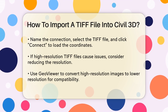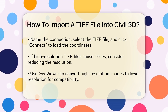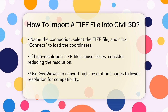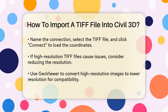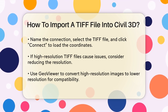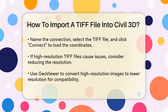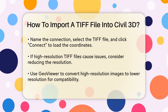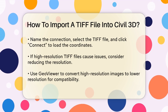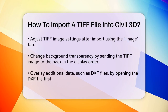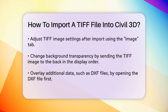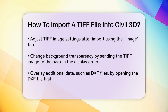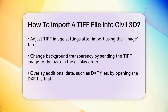If you encounter issues with high-resolution TIFF files, you might need to adjust the resolution. Sometimes high-resolution images can't be imported directly into Civil 3D. To resolve this, you can use a free software like GeoViewer to convert the high-resolution image into a lower-resolution one that Civil 3D can handle. Download and install GeoViewer, open the software, add the local layer, and select the TIFF file. This will help you reduce the resolution and make the image compatible with Civil 3D.